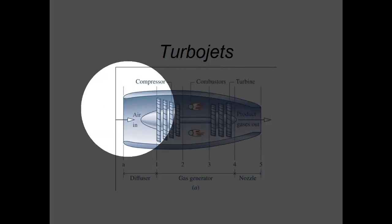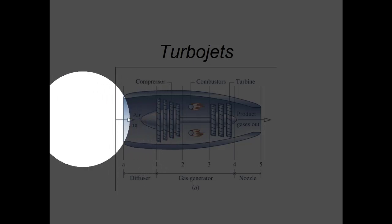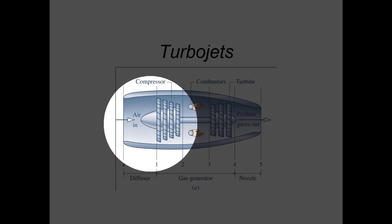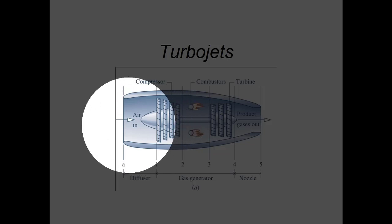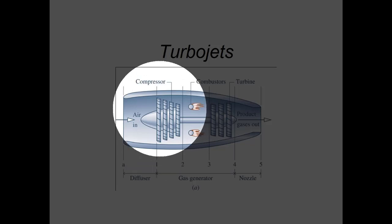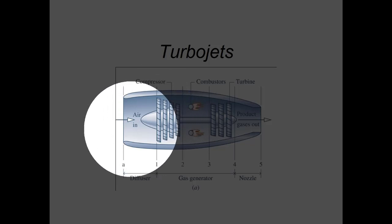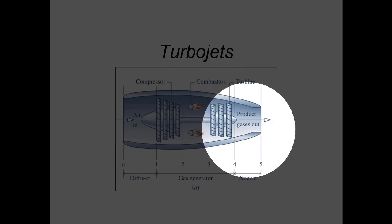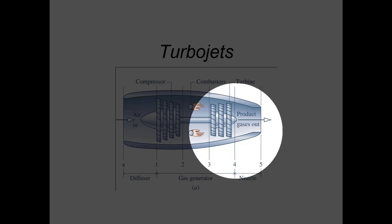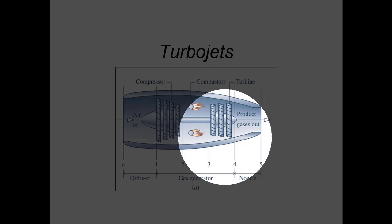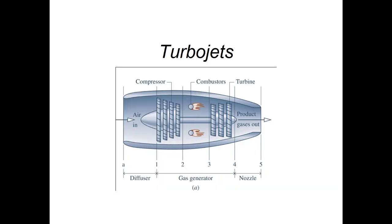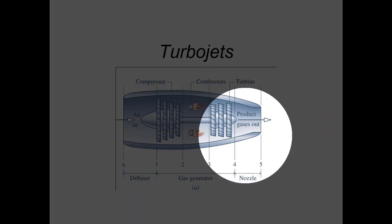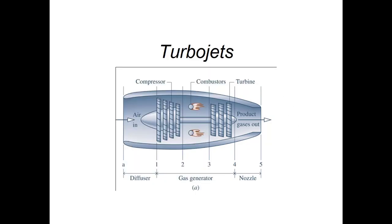The diffuser takes kinetic energy of the fluid and turns it into enthalpy, so we can think of it almost like a compressor — it increases the enthalpy of the air before it reaches the compressor by converting kinetic energy into specific enthalpy. The nozzle we can think of almost like a turbine: it tries to turn enthalpy into kinetic energy. So in the nozzle we're decreasing enthalpy in order to increase kinetic energy, which becomes the velocity of the air coming out.